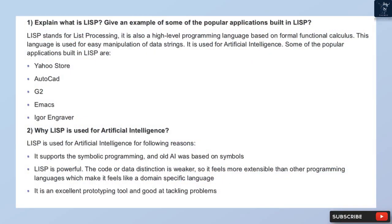Question 1: Explain what is Lisp and give an example of some popular applications built in Lisp. Lisp stands for List Processing; it is a high-level programming language based on formal functional calculus. It is used for easy manipulation of data strings and for artificial intelligence. Some popular applications built in Lisp are Yahoo Store, AutoCAD, G2, and Emacs.